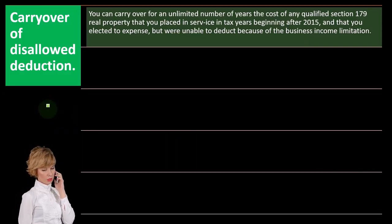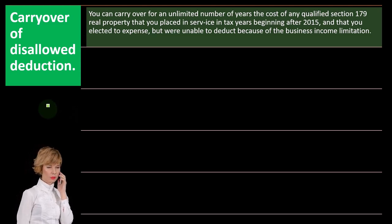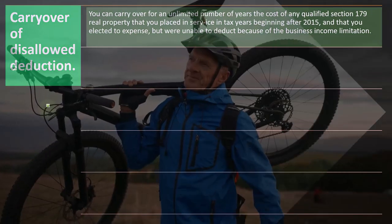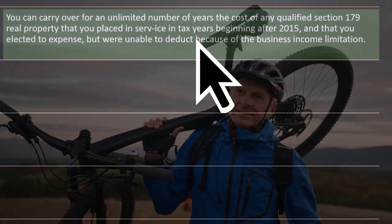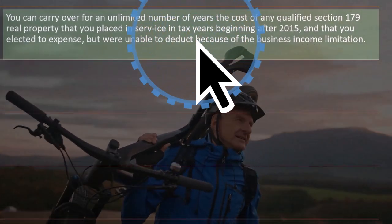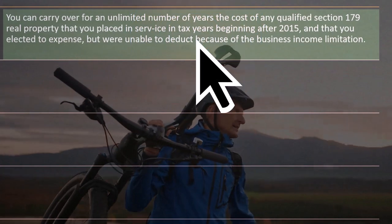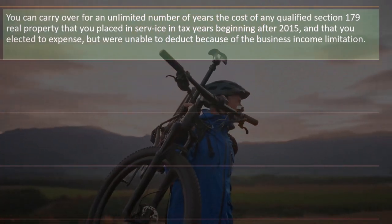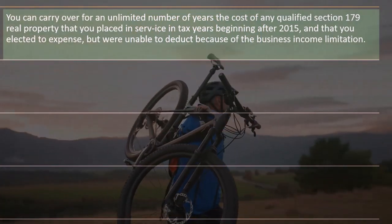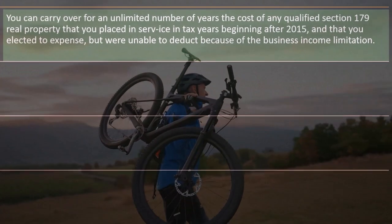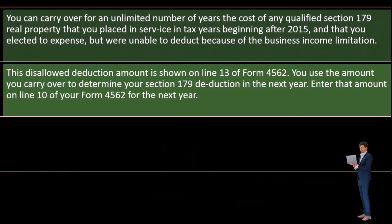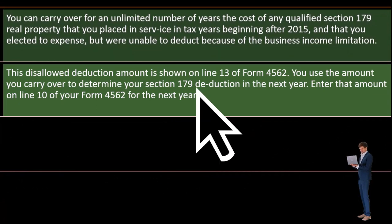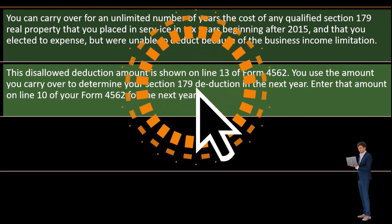Carryover of disallowed deduction. You can carry over for an unlimited number of years the cost of any qualified Section 179 real property that you placed in service in tax years beginning after 2015 and that you elected to expense but were unable to deduct because of the business income limitation. This disallowed deduction amount is shown on line 13 of Form 4562.